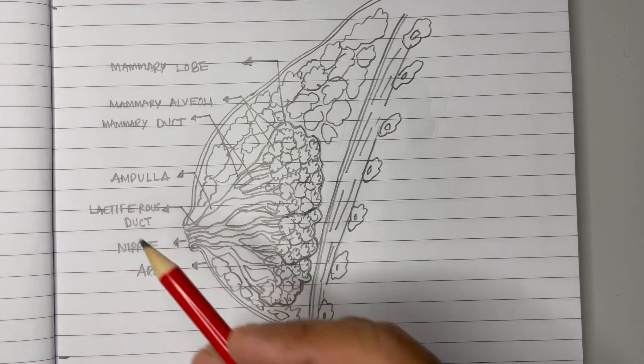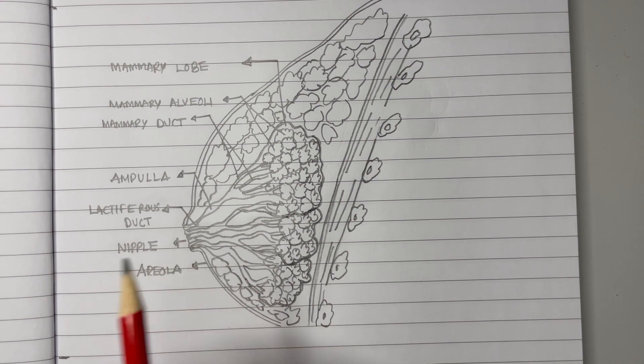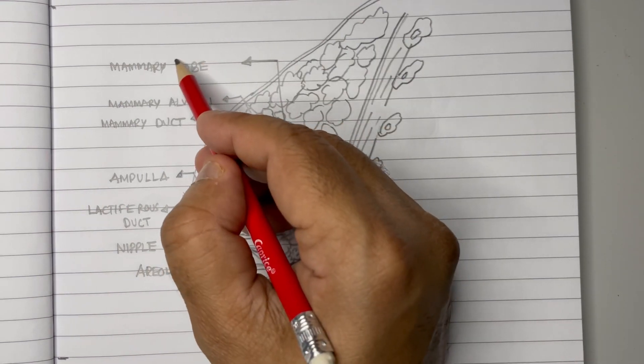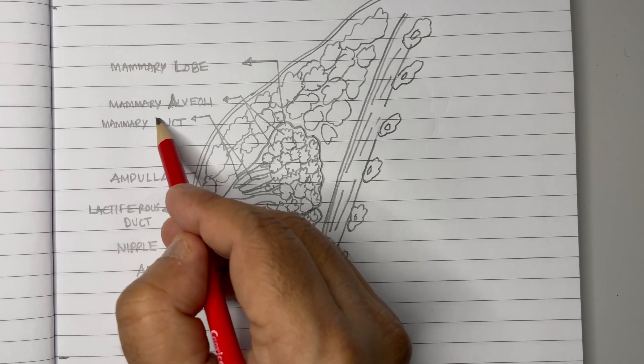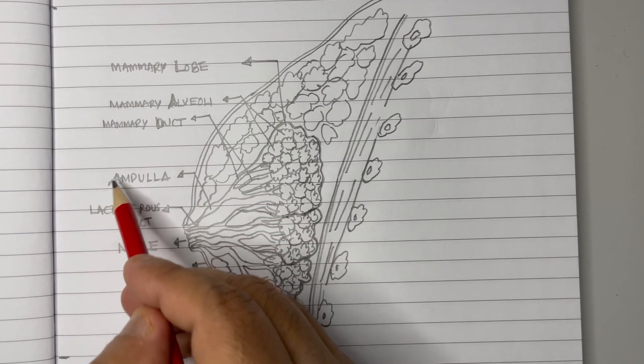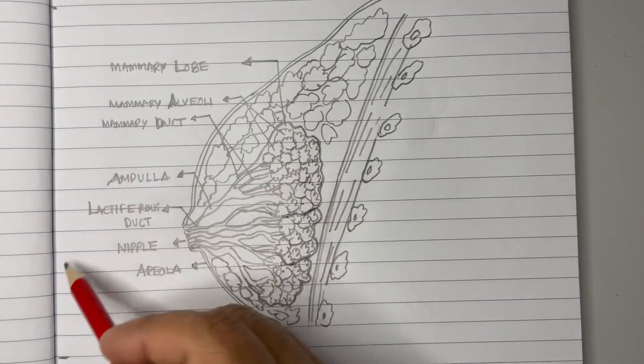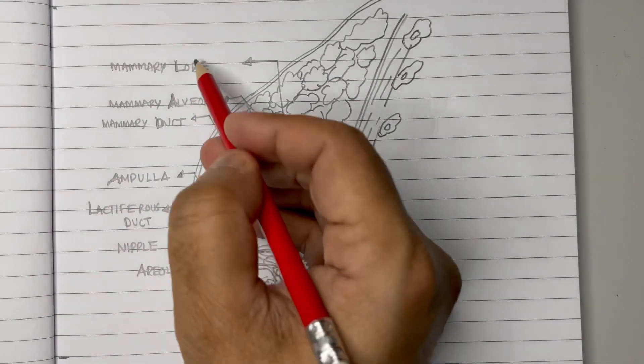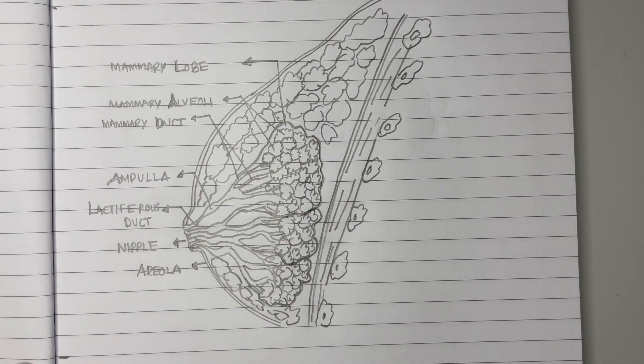The order should be very clear: L-A-D-A-L. Remember LADAL, that is the order from here till here. Lobe, alveoli, duct, ampulla, and lactiferous duct.